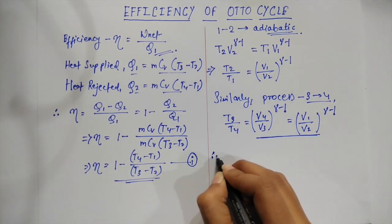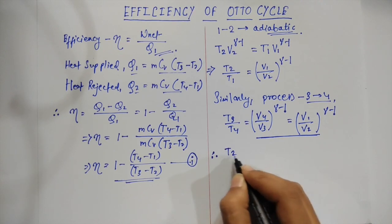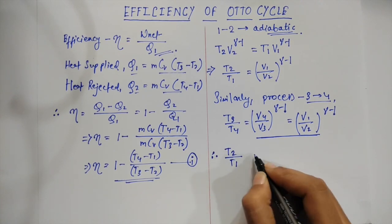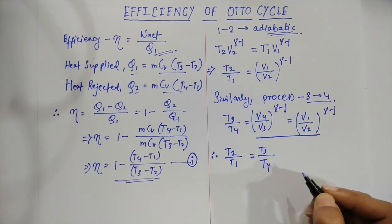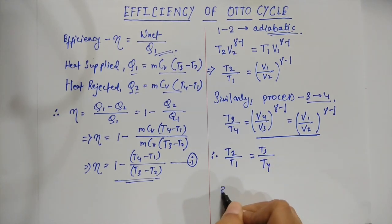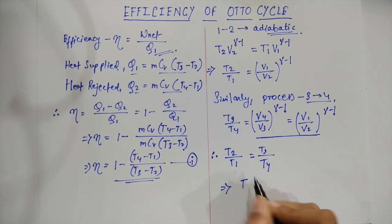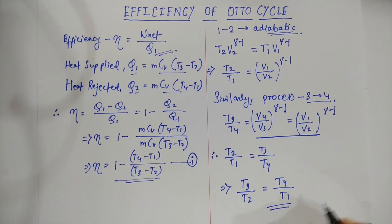Therefore, we can write T2 by T1 is equal to T3 by T4, which implies that by dividing and changing the form we get T3 by T2 is equal to T4 by T1. Let us consider this equation to be equation number 2 to proceed further.